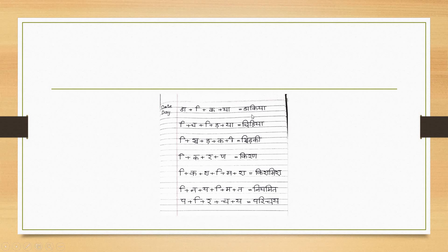So: takia, chidia, khidki, kiren, kishmish, niyamid, pari chai.